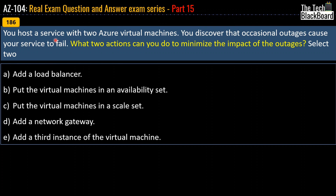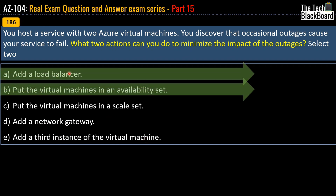Question 186: You host a service with two Azure virtual machines and discover that occasional outages cause your service to fail. What two actions can you take to minimize the impact? Options: add a load balancer, put VMs in an availability set, put VMs in a scale set, add a network gateway, or add a third VM instance. The correct answers are option A — add a load balancer — and option B — put the VMs in an availability set. When VMs are in an availability set with a load balancer in front, if one VM is down, the load balancer diverts traffic to another VM, reducing outages.